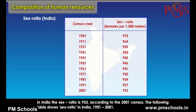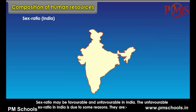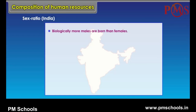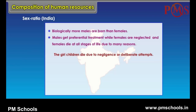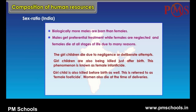Among different states and union territories, Kerala and Pondicherry have a sex ratio of above 1000. The unfavourable sex ratio in India is due to several reasons: biologically more males are born than females; males get preferential treatment while females are neglected; females die at all stages of life. Girl children die due to negligence or deliberate attempts, a phenomenon known as female infanticide. Women also die at the time of deliveries.